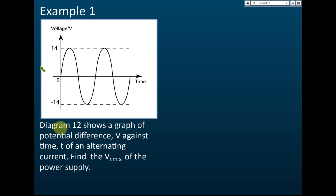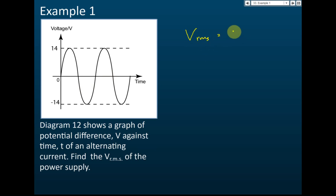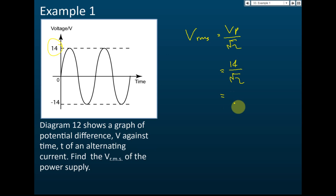Example one: Diagram 12 shows a graph of potential difference V against time t of an alternating current. Find the root mean square voltage of the power supply. Root mean square means effective voltage. We know that V_rms equals V_p divided by square root of 2. V_p equals 14, so 14 divided by root 2 gives 9.9 volts. That's how we find the root mean square voltage.